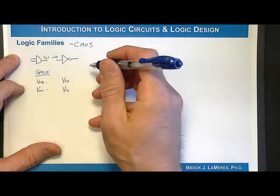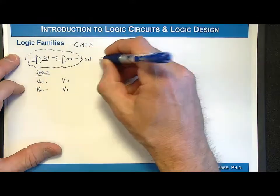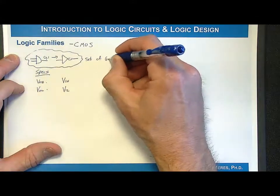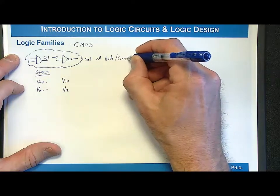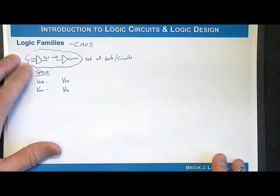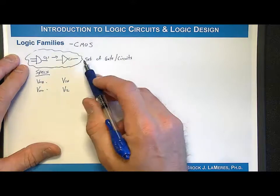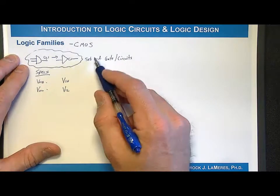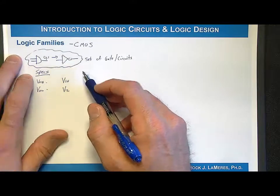A logic family is a set of gates designed to work with each other. It's more than just gates—it's a set of gates or circuits that all use the same technology such that they are designed to work with each other. A logic family might have all the basic gates, some storage devices, and some more complicated digital logic circuits.